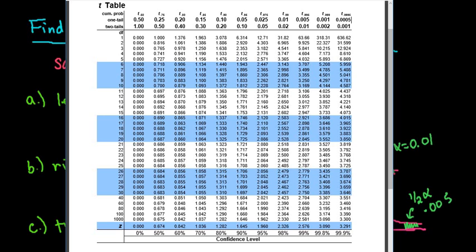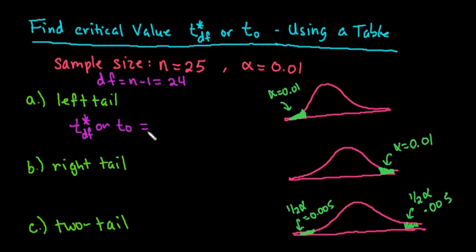So for this one, since we had an alpha of 0.01, we would go to this one right here, the 0.01, and then we would go down and we would find our degrees of freedom. So since our degrees of freedom are 24, we would come across here, and it's 2.492. So we have to remember for a left tail that it must be negative, so this is -2.492.